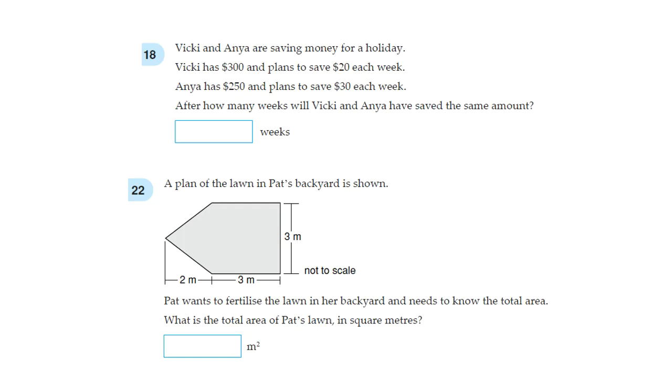After how many weeks will Vicky and Anya have saved the same amount? It's asking you how many weeks will it take for them to reach the same amount. So let's use some algebra here. For Vicky it's 300 plus 20 times x. x is the number of weeks which we don't know yet. And for Anya it will be 250 plus 30 times x. We don't know what x is equal to. So after x number of weeks their amounts will be equal to each other. Now 20 times x we can just write it as 20x. And the same applies for 30 times x, so that's 30x.